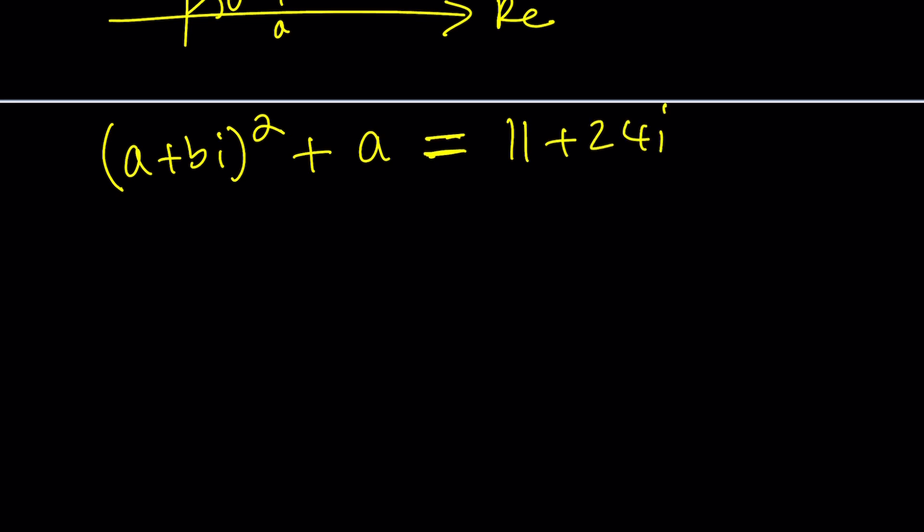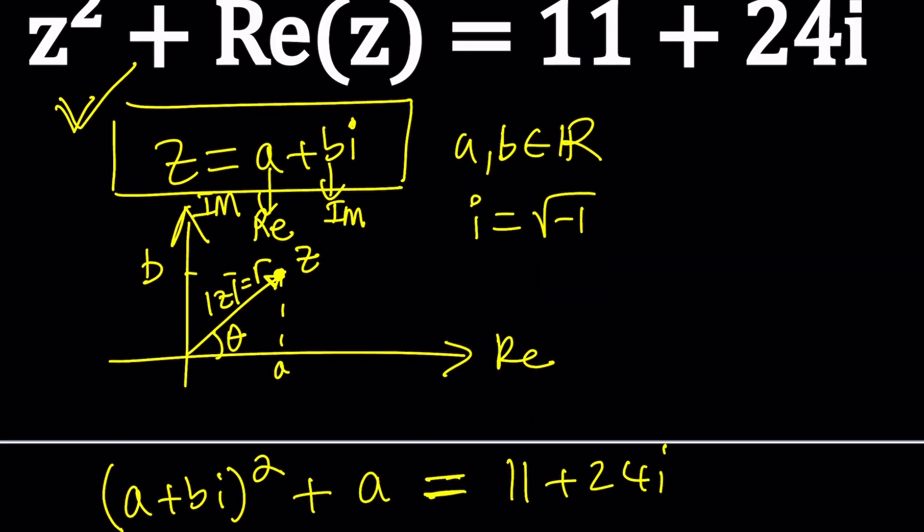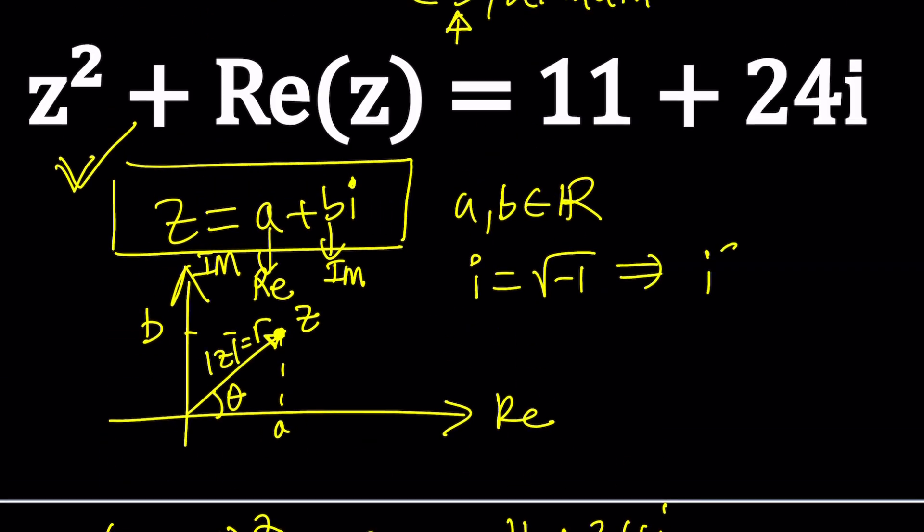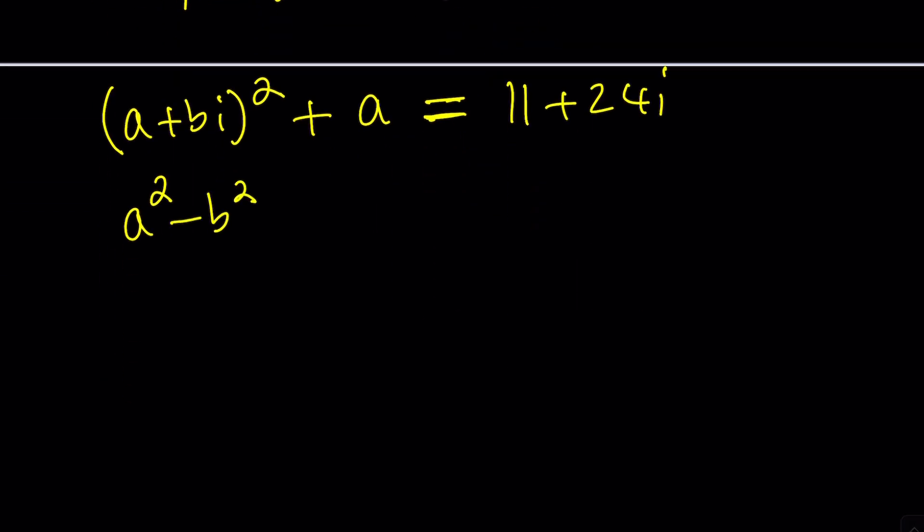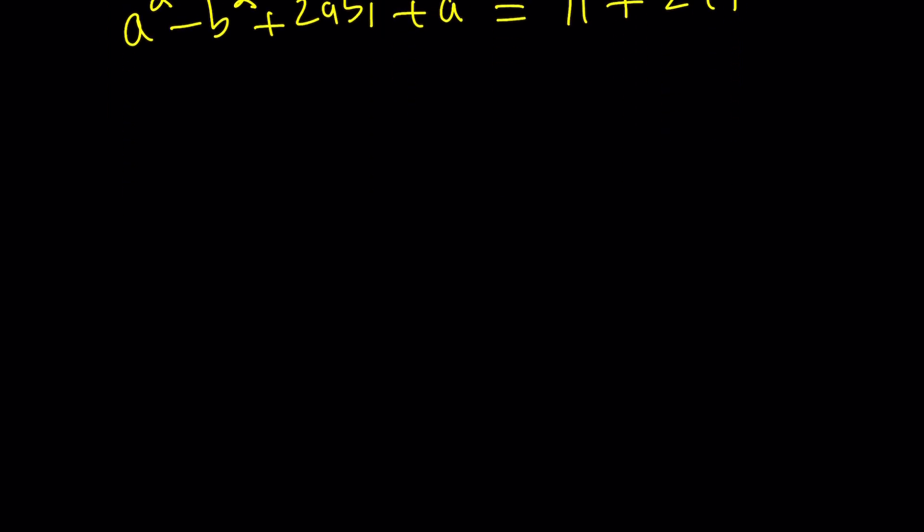So this equation needs to be solved. But how can we solve it? There are two unknowns, a and b. Let's go ahead and square this first. Now when you square a plus b, it's a squared plus b squared plus 2ab. But when you square a plus bi, it's a little different. It's a squared plus b squared i squared. But guess what? Because i is the square root of negative 1, i squared is equal to negative 1, something that you should never forget. So you get minus b squared instead of plus, and then plus 2abi plus a equals 11 plus 24i. Awesome.